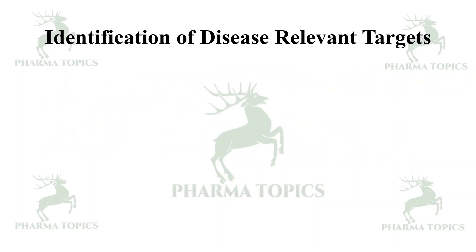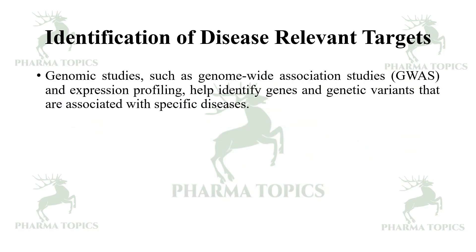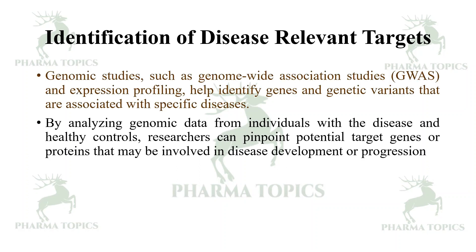Identification of disease-relevant targets: genomic studies such as genome-wide association studies and expression profiling help identify genes and genetic variants that are associated with specific diseases. By analyzing genomic data from different individuals with the disease and healthy controls, researchers can pinpoint the potential target genes or proteins.